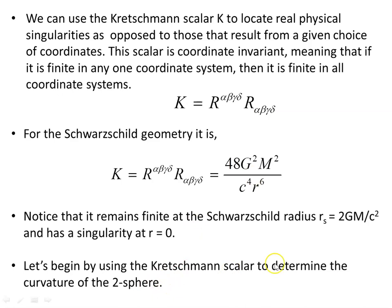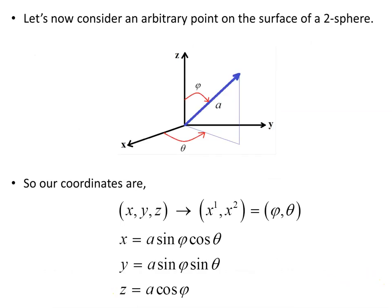Now let's begin by using the Kretschmann Scalar to determine the curvature of the familiar 2-sphere. I've made a video in the past using the contracted Ricci tensor and Ricci curvature scalar to find the curvature of the 2-sphere, so you can look at that. But let's briefly retrace what we need.